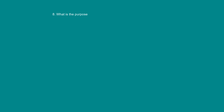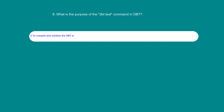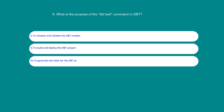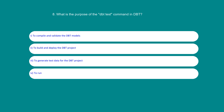What is the purpose of the dbt test command in dbt? Option 1: To Compile and Validate the dbt models. Option 2: To Build and Deploy the dbt project. Option 3: To Generate test data for the dbt project. Option 4: To Run Unit tests on the dbt models. The answer is 4: To Run Unit tests on the dbt models.